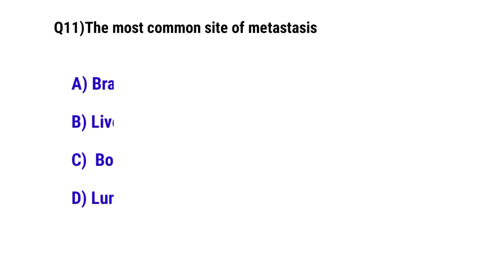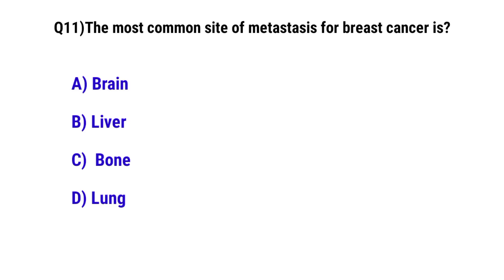Question No. 11: The most common type of metastasis for breast cancer is — the correct option is C: bones.